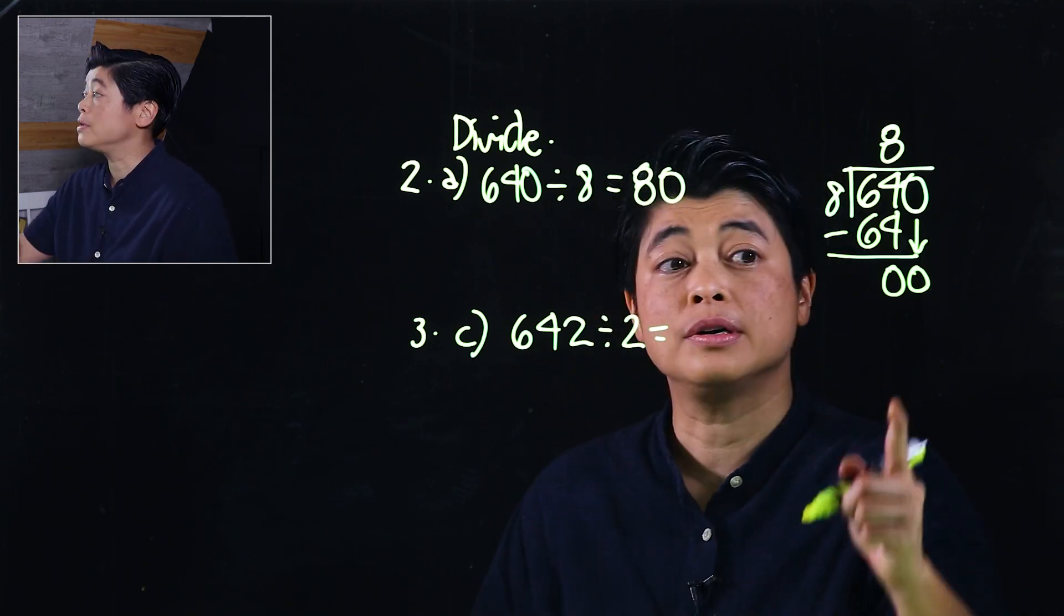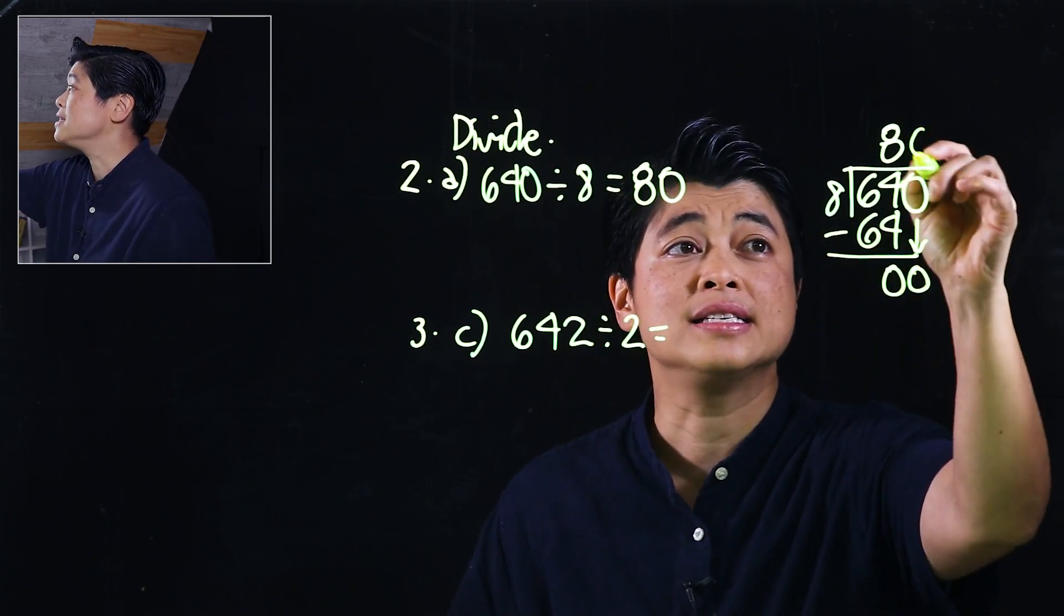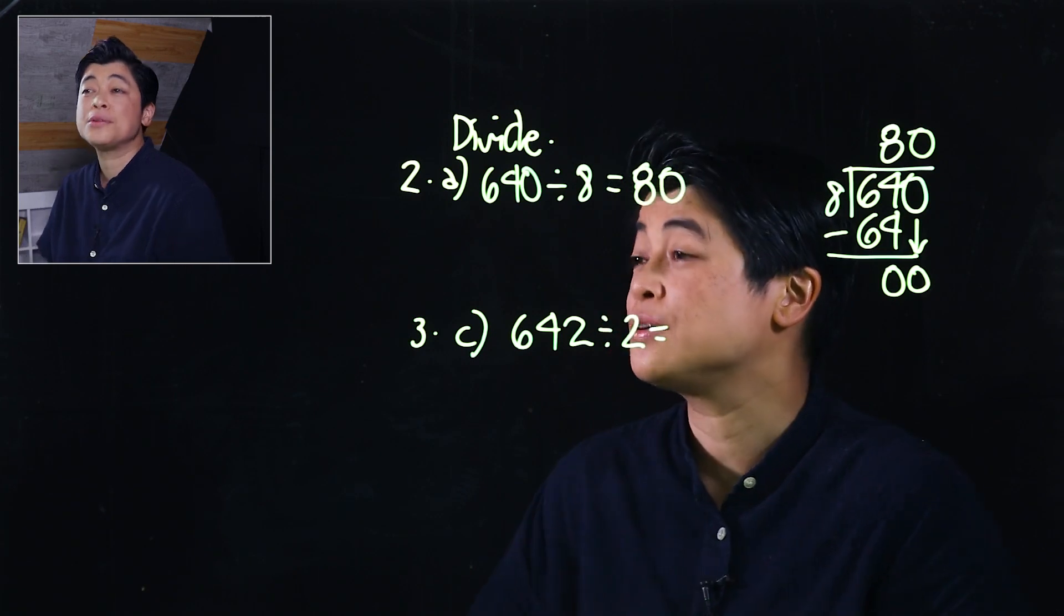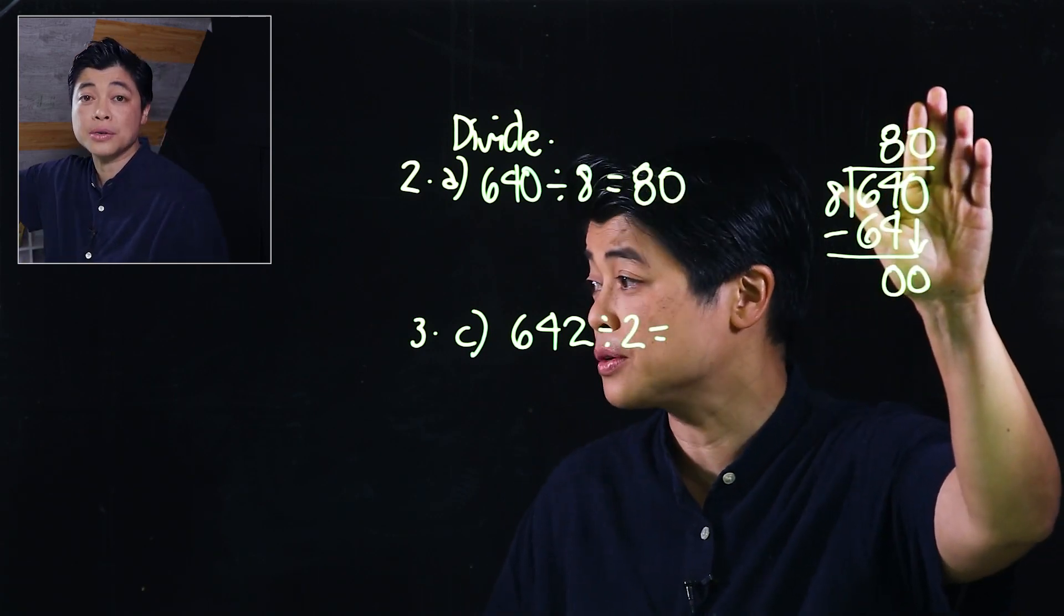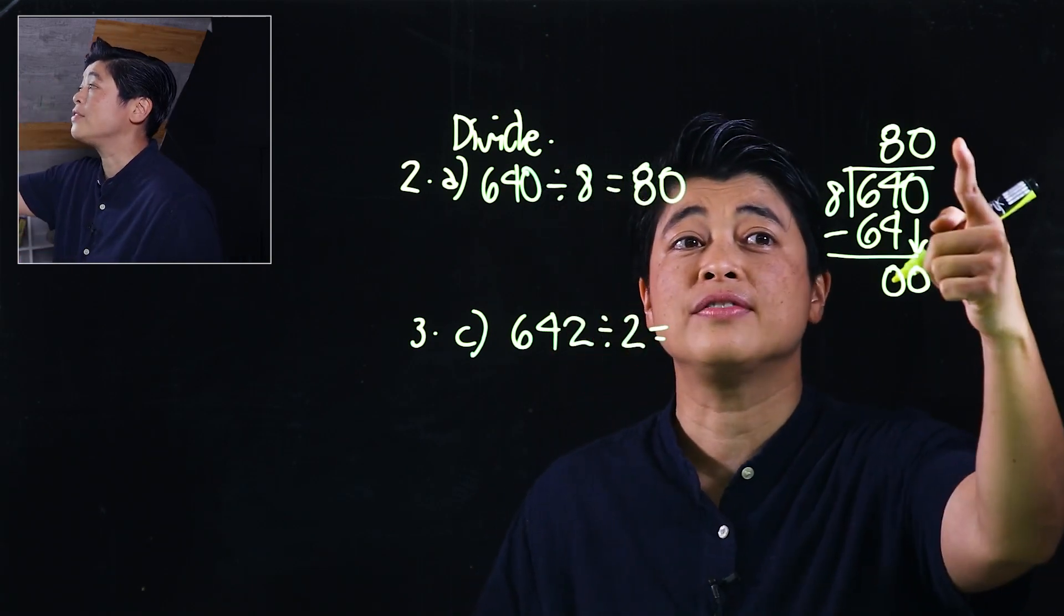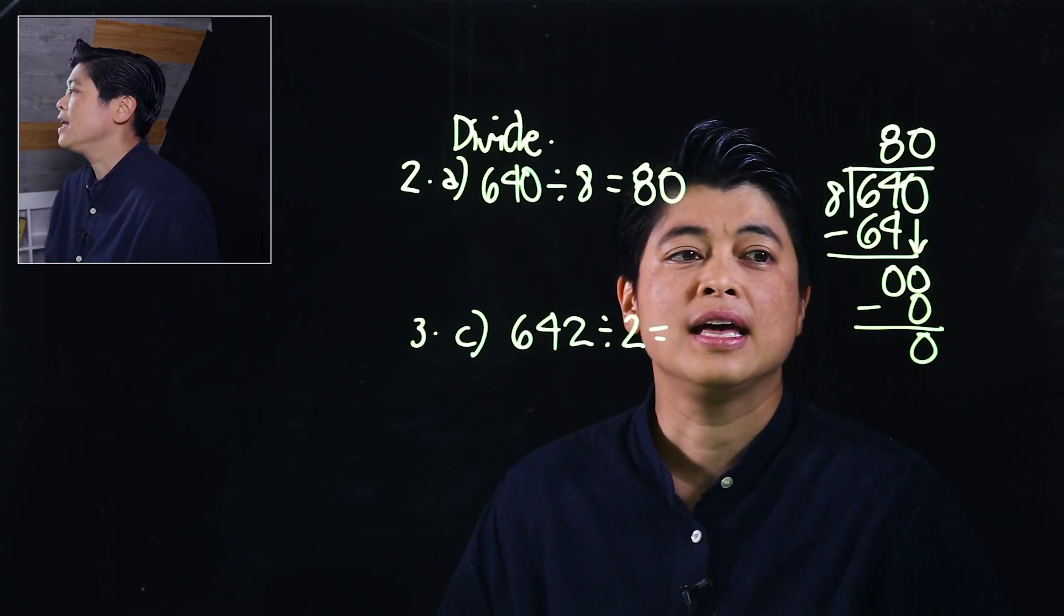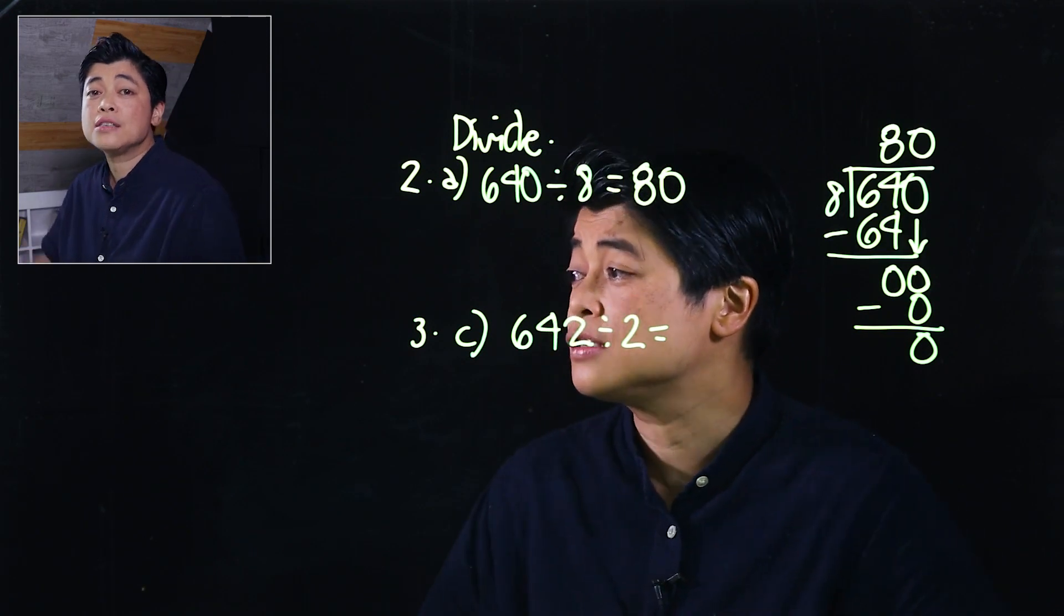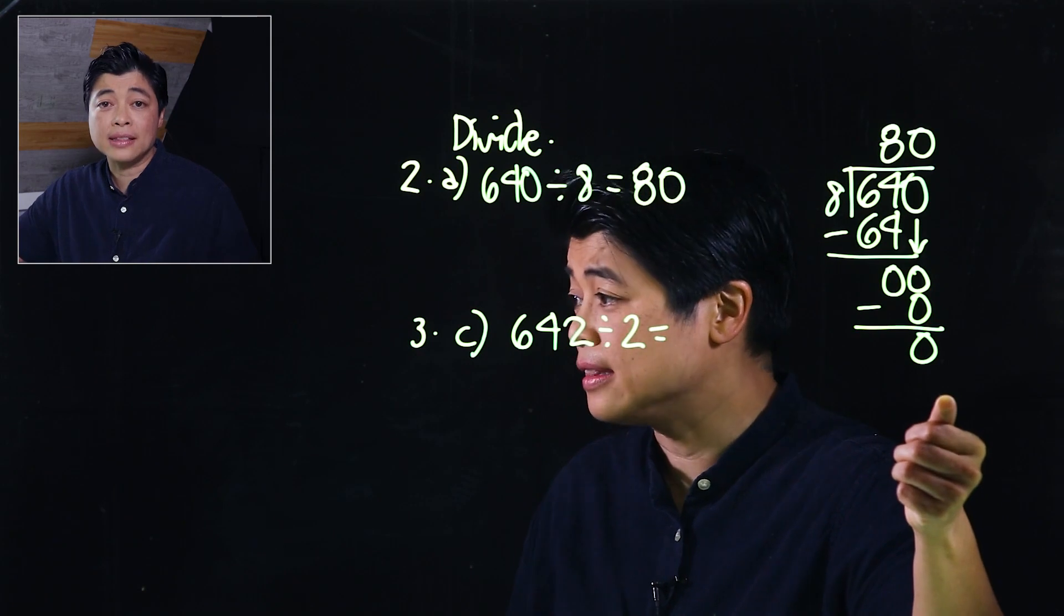Remember, zero divided by 8 is zero. So there are no 8s in zero. Most kids will just put the 8 and forget the zero, but we need to remind the kids that they have to go through the process. So after we divide, we multiply zero, then we subtract, and then we end with a zero. We need to train our kids to go through the complete process until the very end.